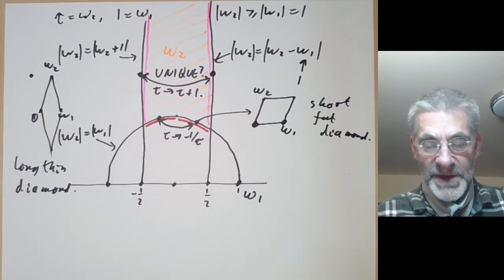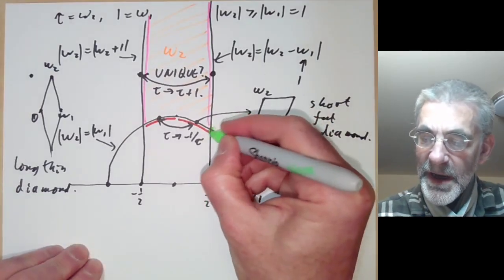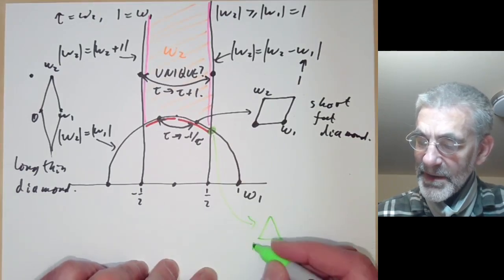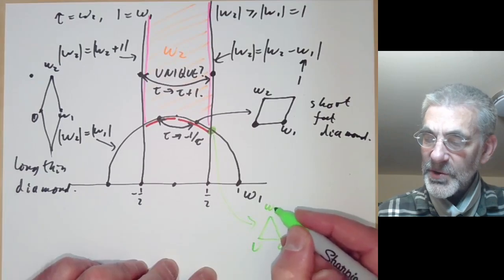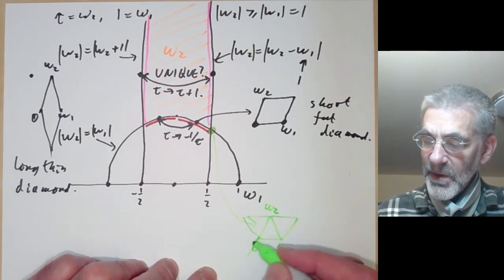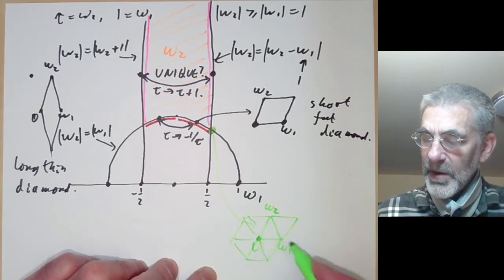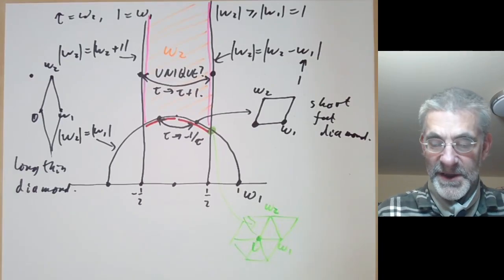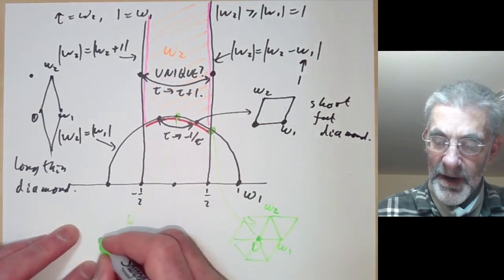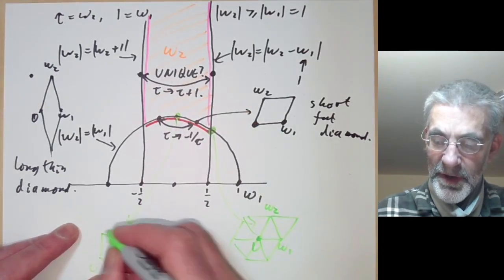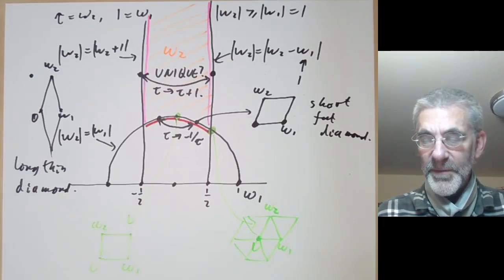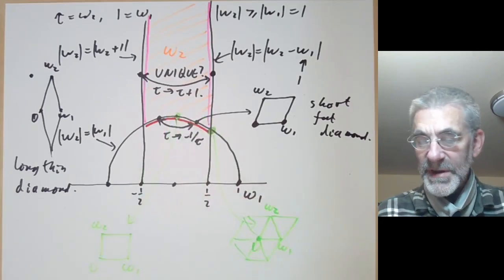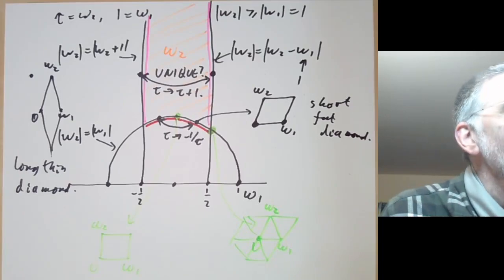By the way you may have noticed there are two very special cases which are this point here. So this corresponds to something where 0 and omega-1 and omega-2 form an equilateral triangle, and this lattice is rather special because normally there are two choices for omega-1 but in this case there are actually six choices for omega-1. So these two points cause complications. They're called elliptic points and they're points where the lattice has extra symmetry.